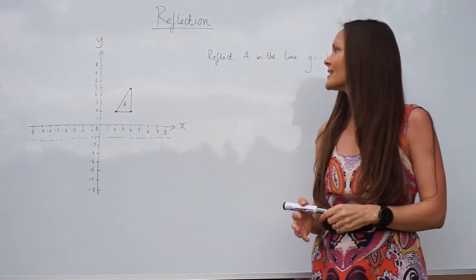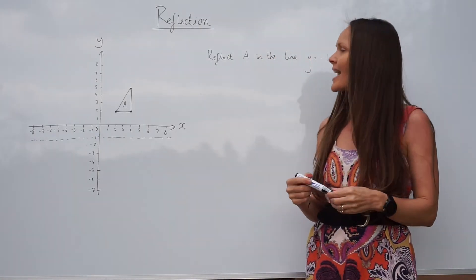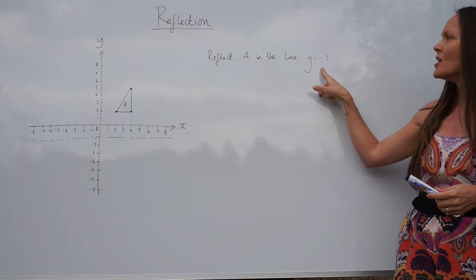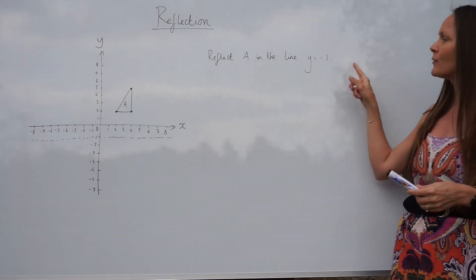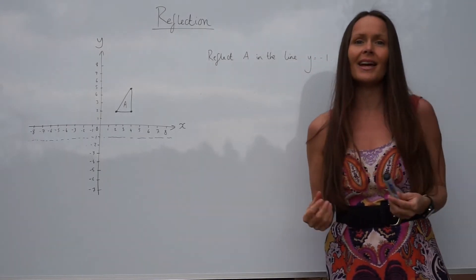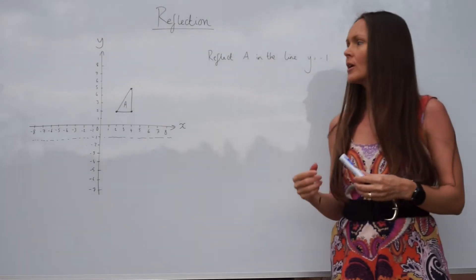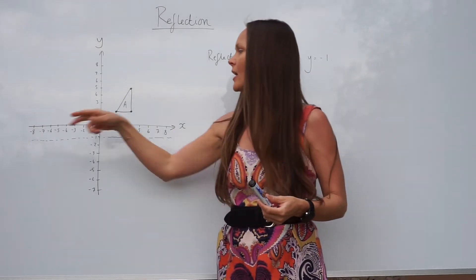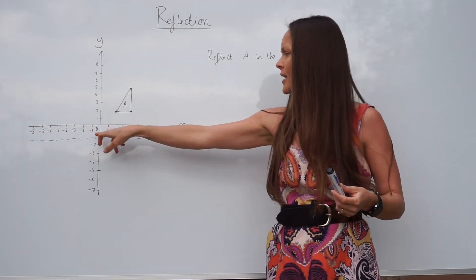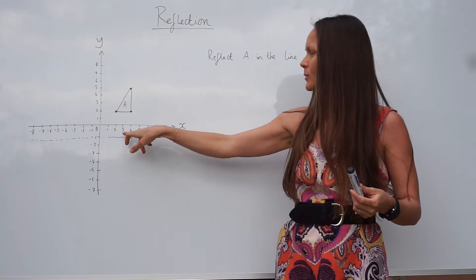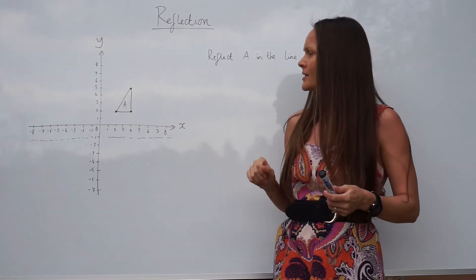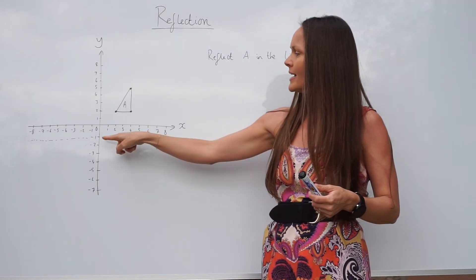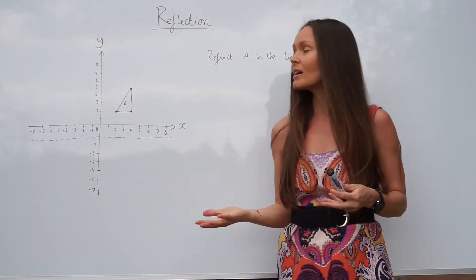In the second question it says reflect A in the line y equals negative one. If that line isn't already indicated on the graph, make sure you draw it on. Here I've just marked roughly the line y equals negative one, and we need to reflect that triangle in this new mirror line.